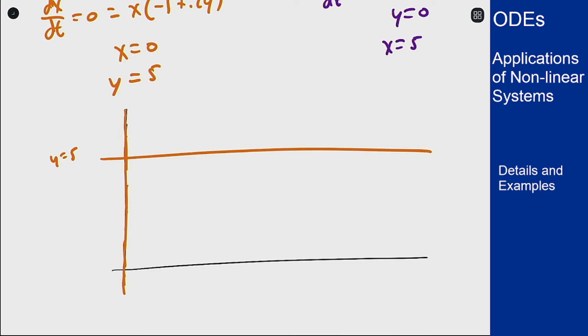For the purples, which is when dy/dt is zero, we have y equals zero or the x-axis, and x equals 5, a vertical line around there.